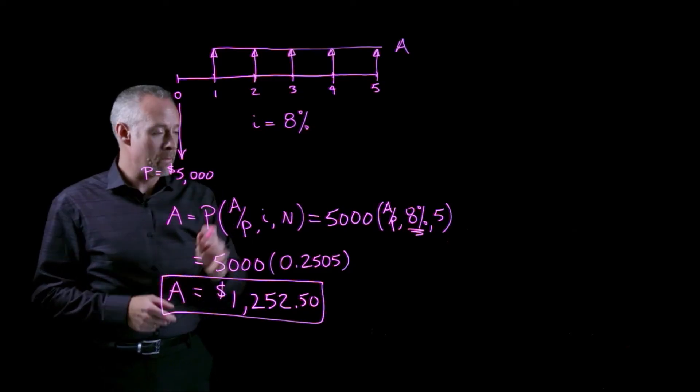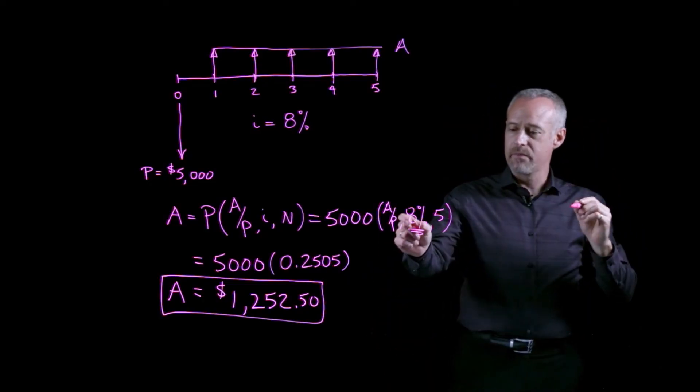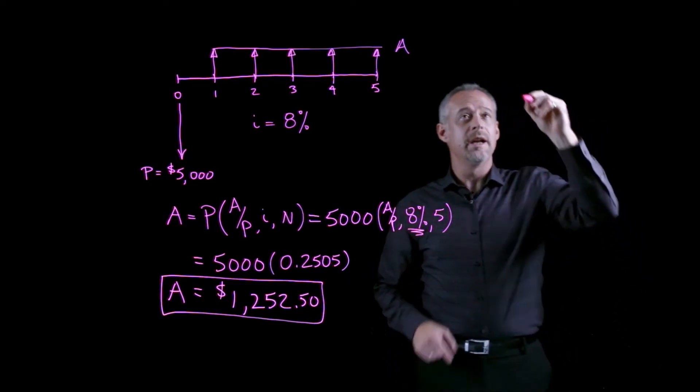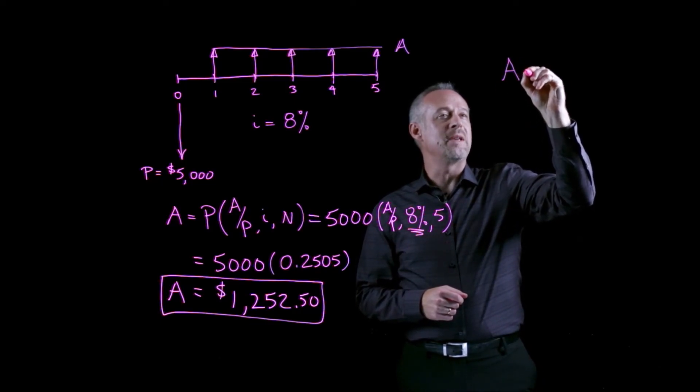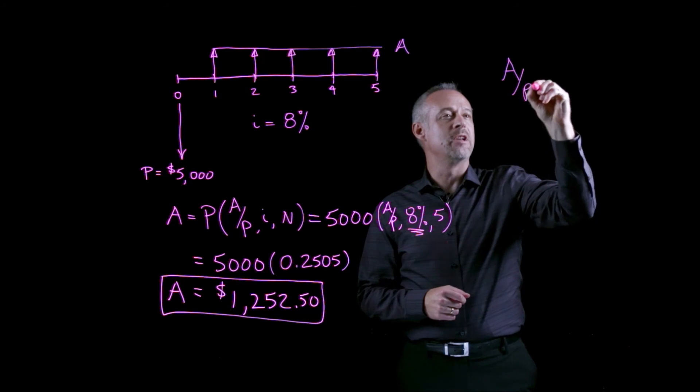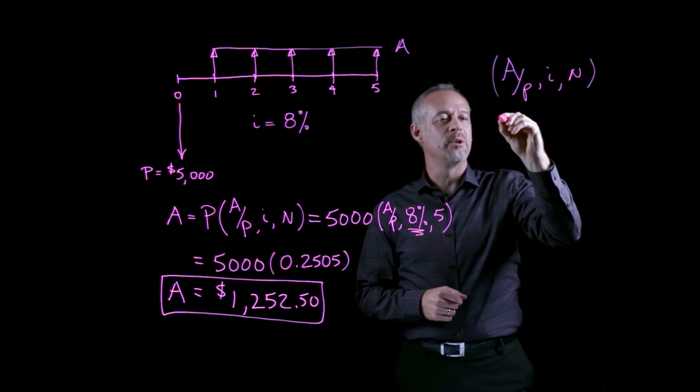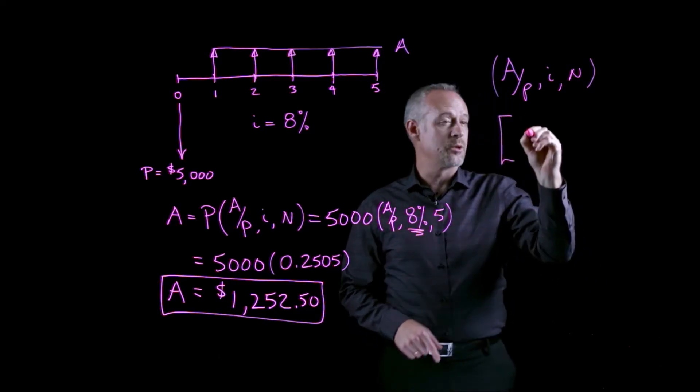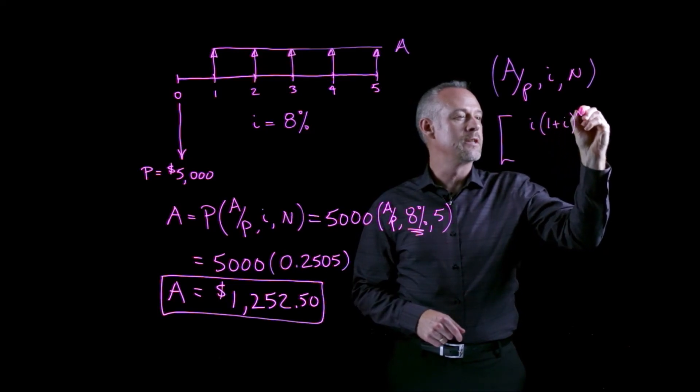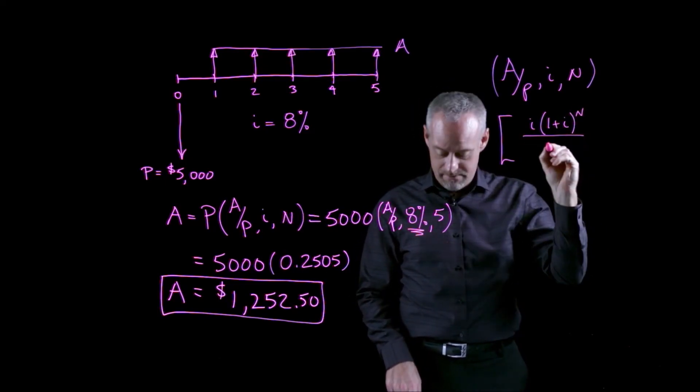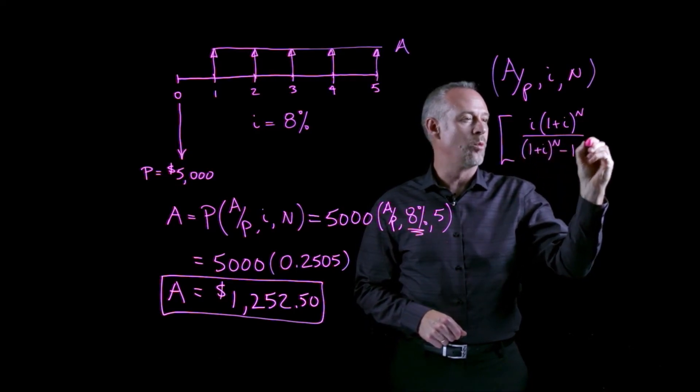Now we can make this calculation quite easily using a factor from a table because we happen to have a nice round number 8%. But just in the interest of completeness, if we don't have a nice round interest factor, it's nice to note that the A given P factor for i and n. If we had to use a formula to calculate that, the formula is actually i times 1 plus i to the n divided by 1 plus i to the n minus 1.